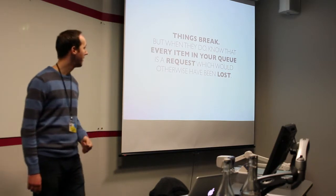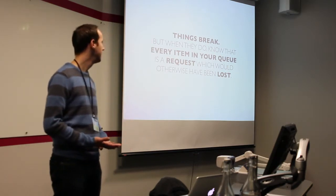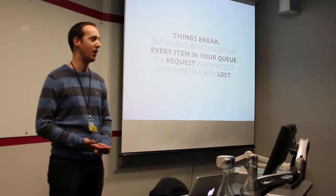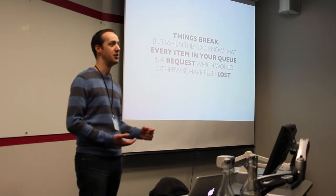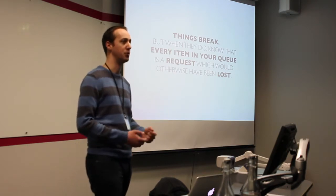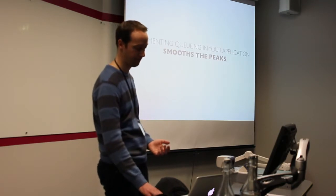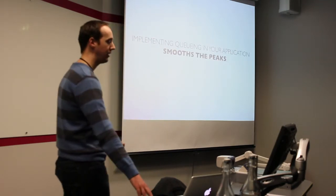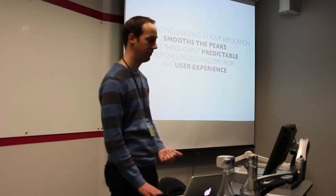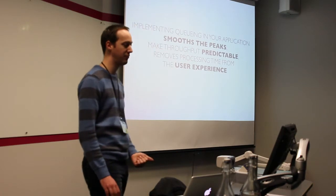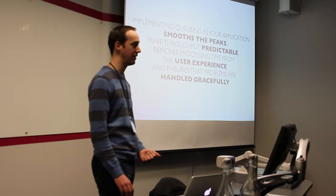Things break, but when they do, know that every item in your queue — those 5,500 items — is a request which would otherwise have been lost. If we hadn't queued that user data, we'd have had 5,500 user data updates which would have just vanished and we wouldn't have been in sync with our CRM. Implementing queuing in your application smooths peaks, makes your throughput predictable, removes processing time from the user experience, and ensures that problems are handled gracefully and that you're in control.